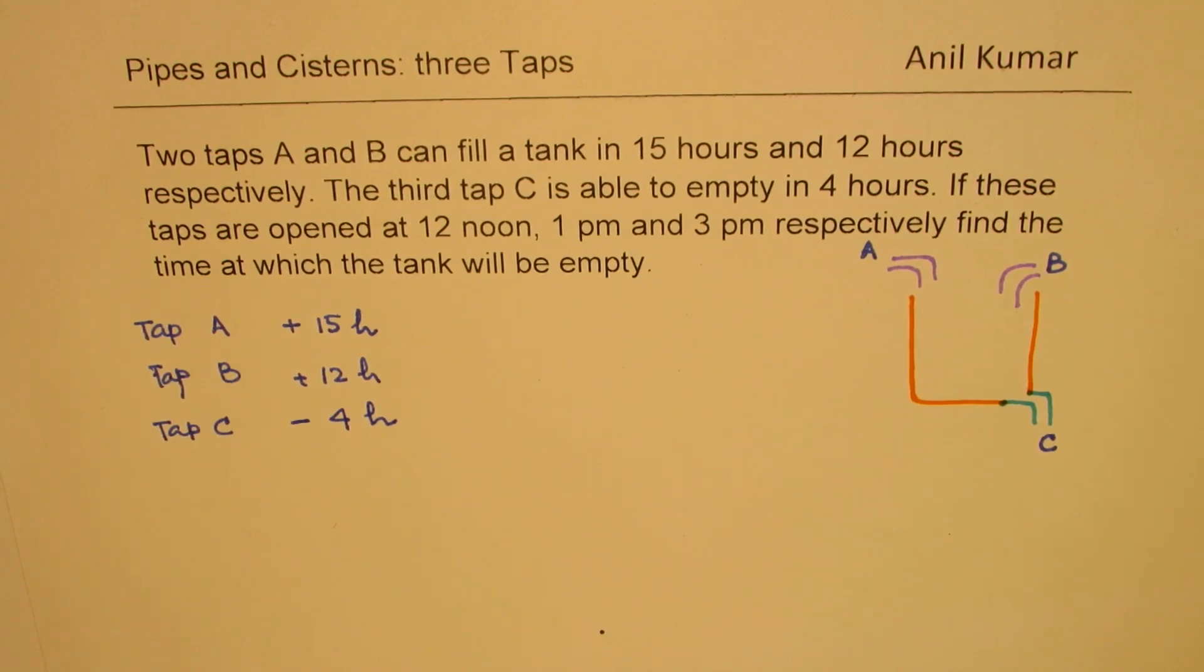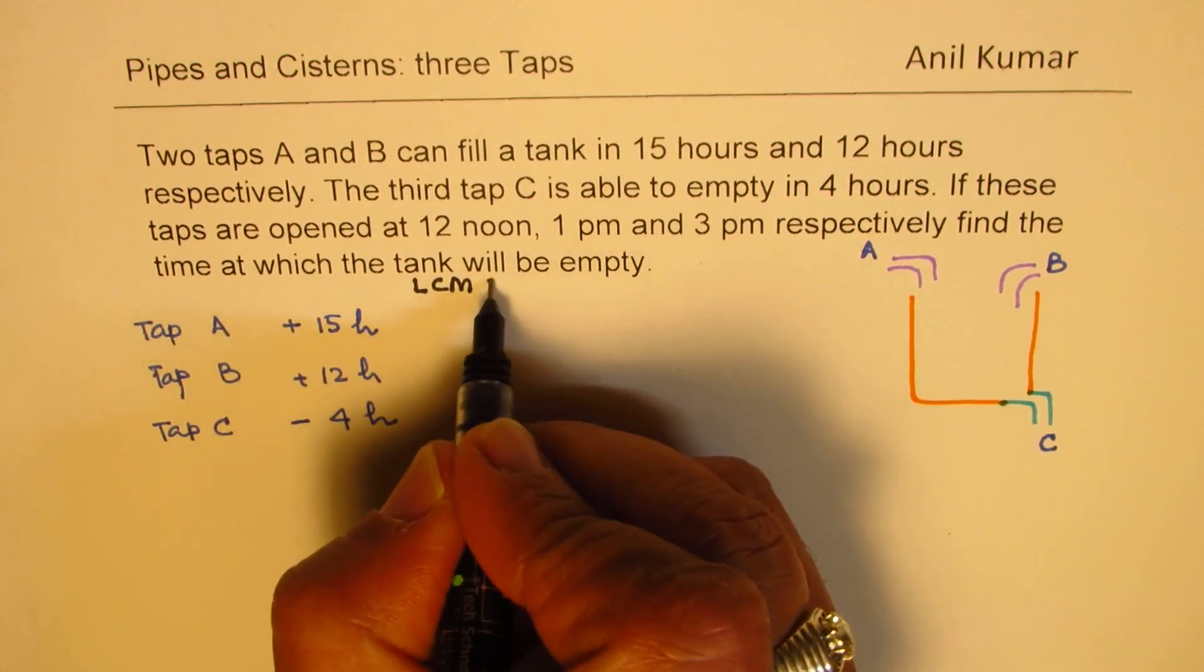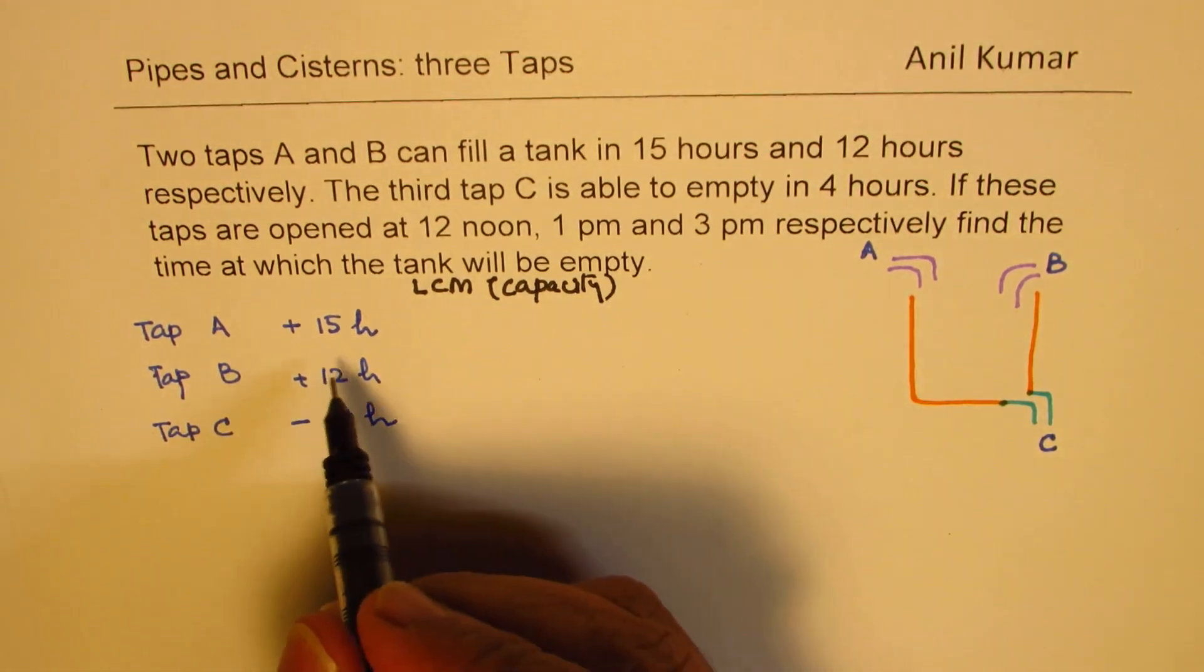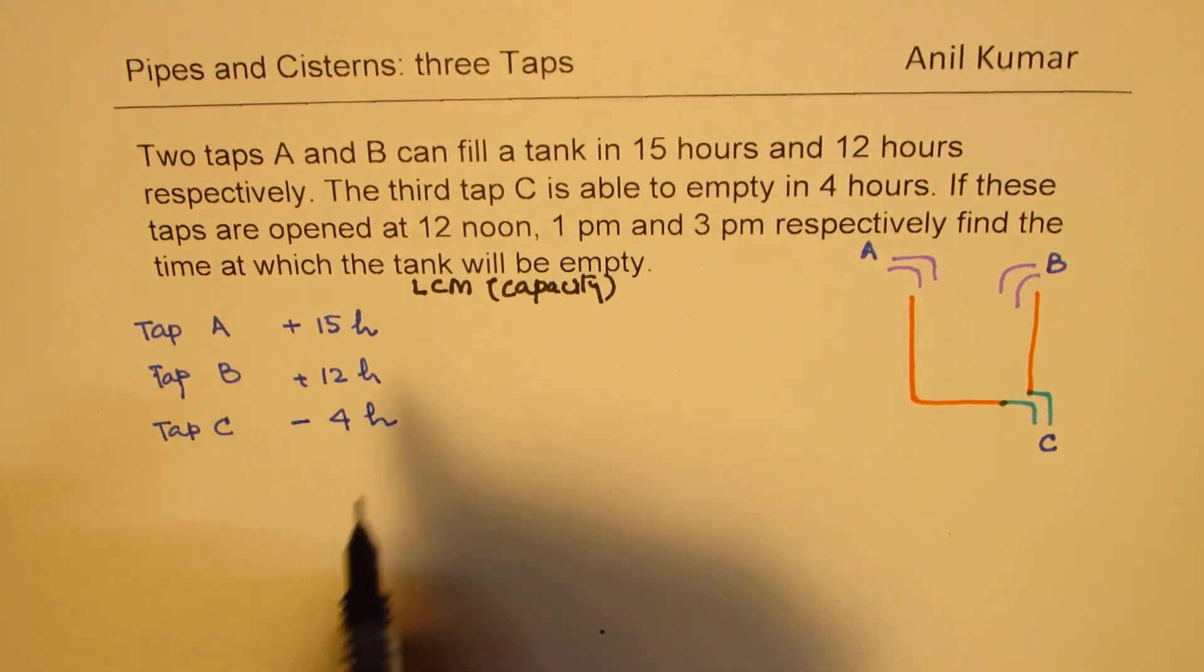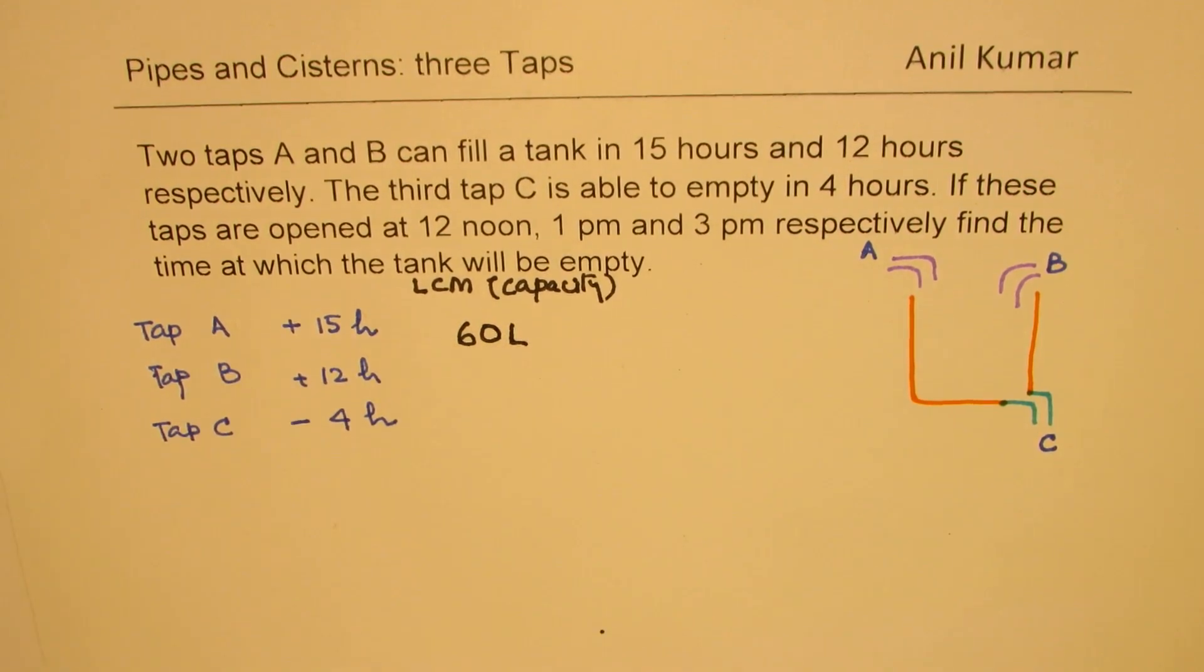Now what we can do here is that we don't know what the capacity is. So let's take LCM to find a capacity. So let's find what is the LCM of this. This LCM will give us capacity to work with. So 15, 12, and 4, 60 is a good number to take. Let's say 60 liters.